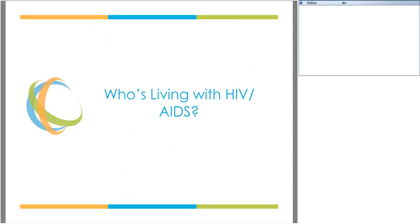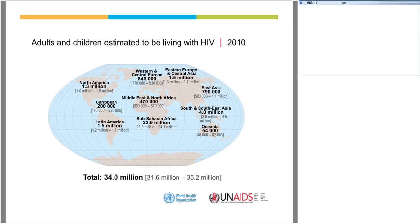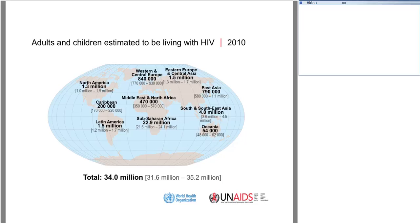Now let's talk about who is living with HIV here and abroad. This information from the World Health Organization estimates adults and children living with HIV in 2010. Approximately 34 million people around the world are living with HIV, with some estimates as high as 35 million or more. North America accounts for about 1.3 million, Latin America about 1.5 million, with Sub-Saharan Africa having the highest numbers at 22.9 million.